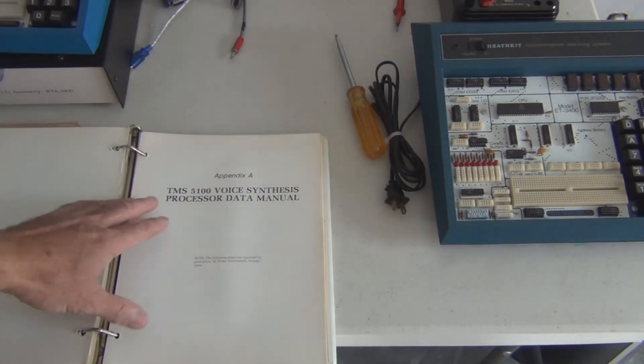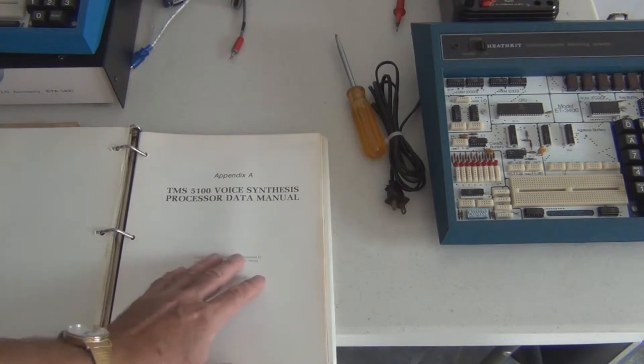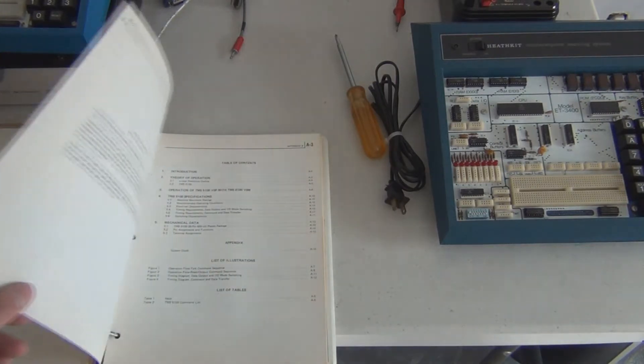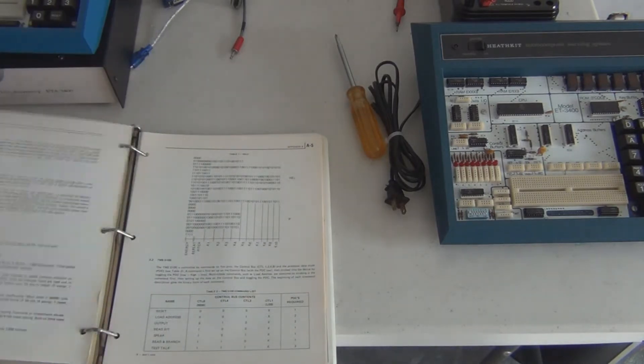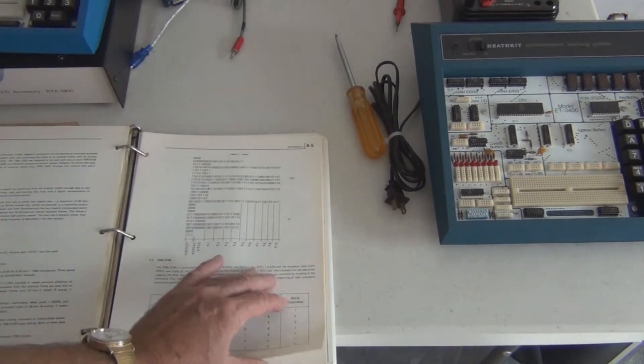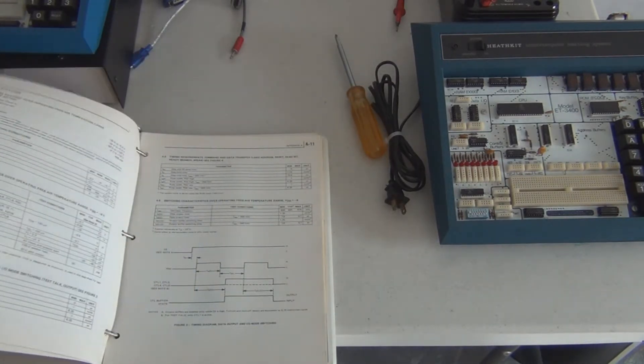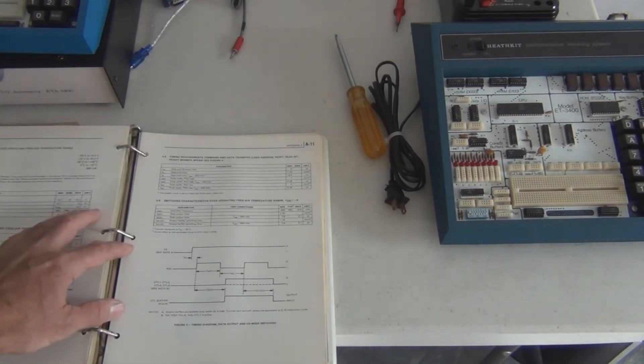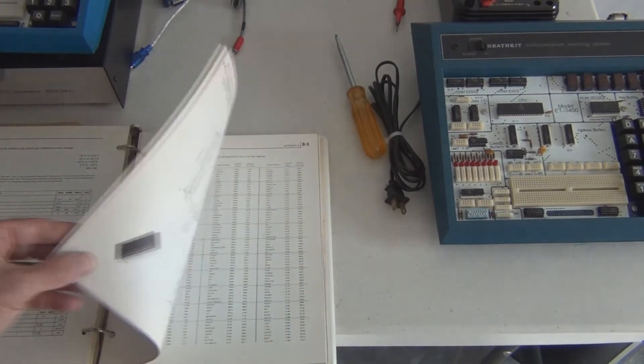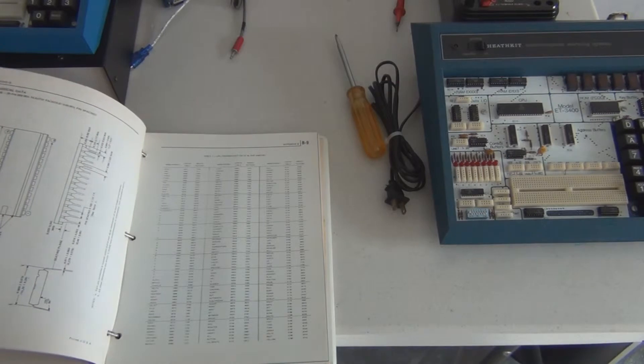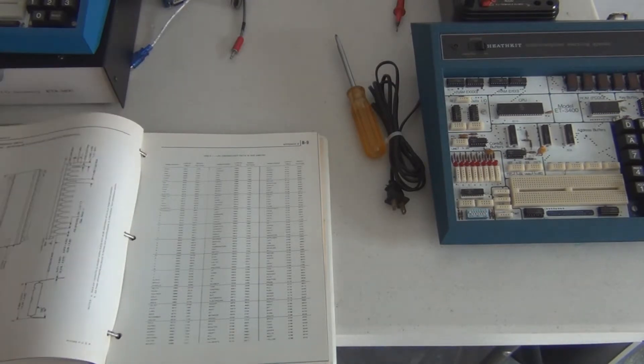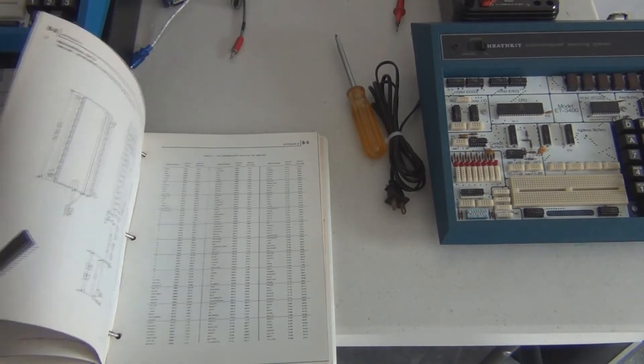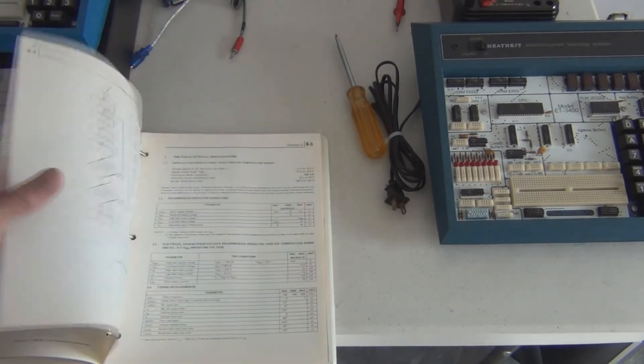Here are some of the parts. There's a TMS 5100 voice synthesis processor. I actually did find one of these chips that I think was just pulled from a Speak and Spell. There's a TMS 6100—I think that's a ROM.